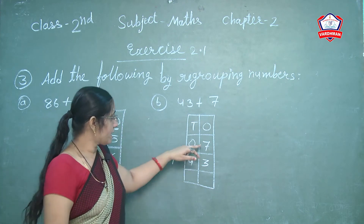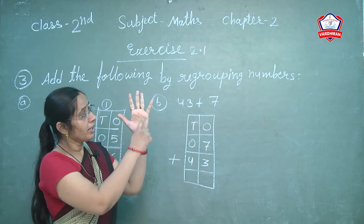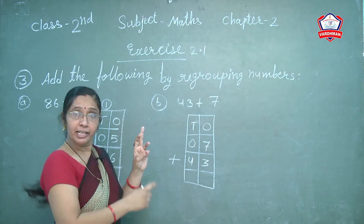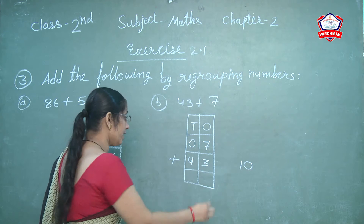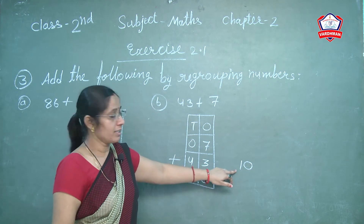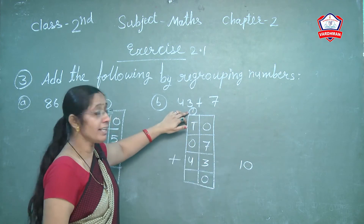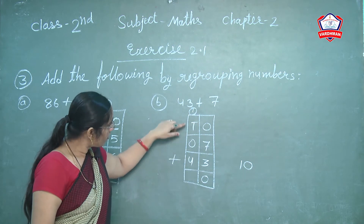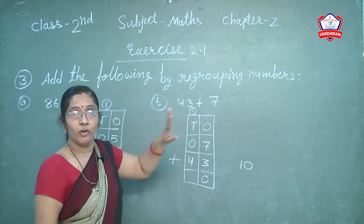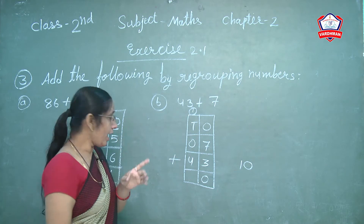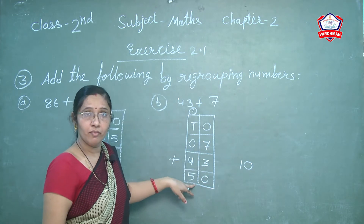Now count 7 plus 3 — count 3 ahead of 7: 7, 8, 9, 10. How many? 10. In 10, the first digit is 0, which means ones. So write 0 in the ones column. The 1 in 10 goes to the tens column as carry. So 1 carry plus 0 plus 4 — count: 4 plus 1 is 5. So write 5.